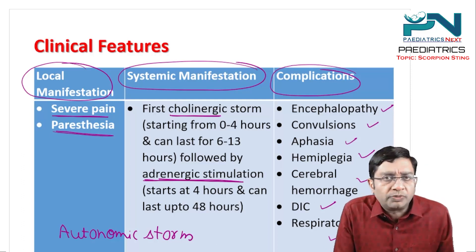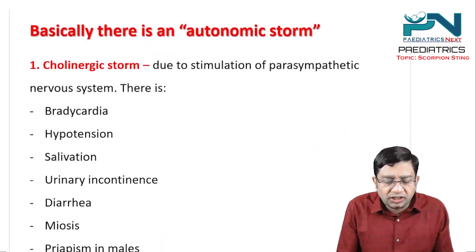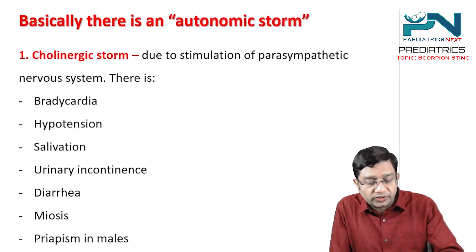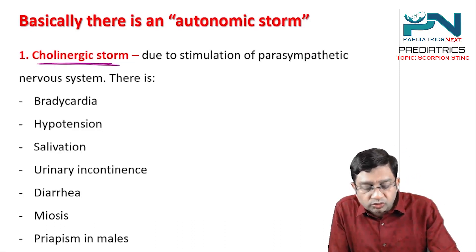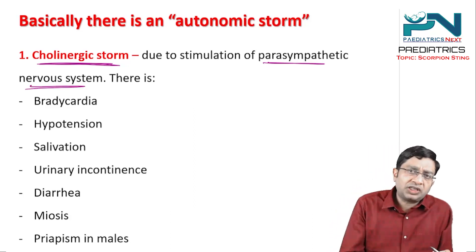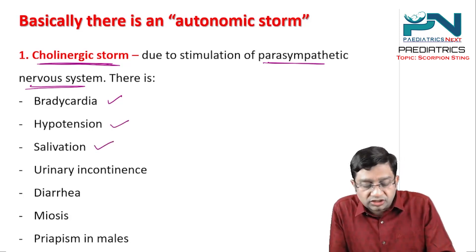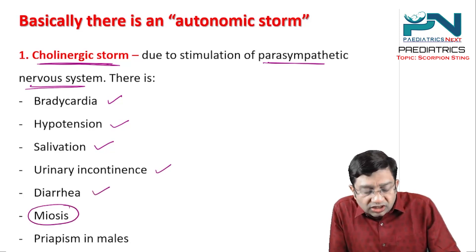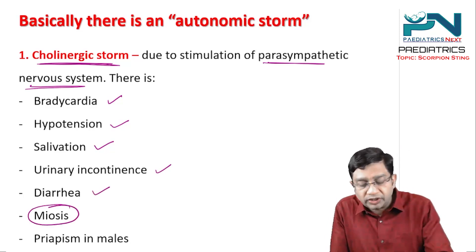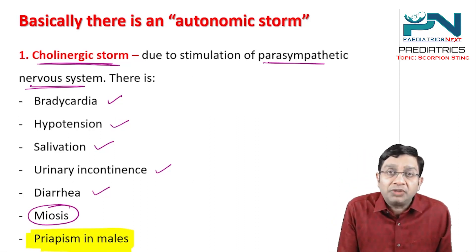Please remember the word autonomic storm. When you say the autonomic storm, basically initially there is the cholinergic storm, and the cholinergic storm will be due to the stimulation of the parasympathetic nervous system. The parasympathetic nervous system will be activated — there will be bradycardia, hypotension, salivation, urinary incontinence, diarrhea, constricted pupil (miosis), and importantly this can also cause priapism in males.